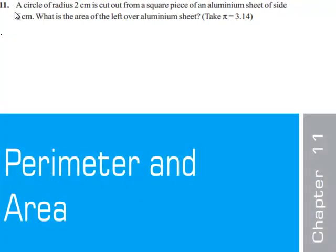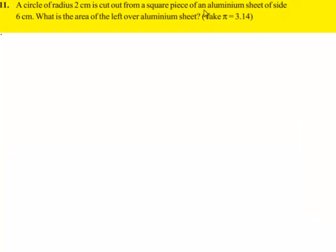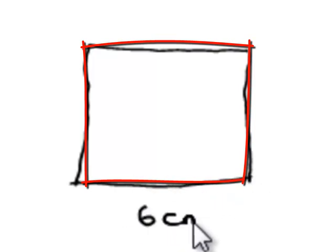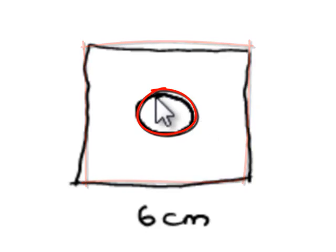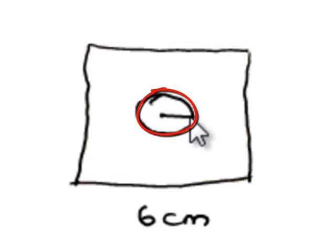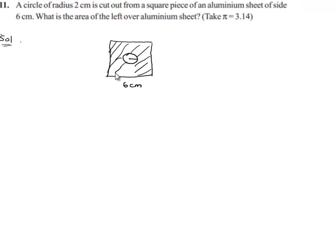Moving on to question number 11. A circle of radius 2 cm is cut out from a square piece of aluminium sheet of side 6 cm. What is the area of the leftover aluminium sheet? Moving on to solution. Here, from a square piece of side 6 cm, a circle of radius 2 cm has been cut out. We need to find the remaining area.